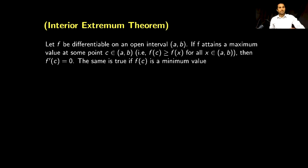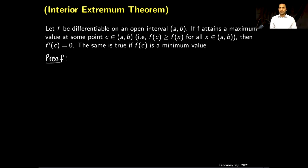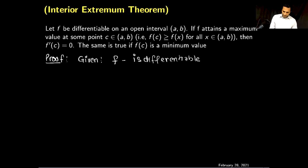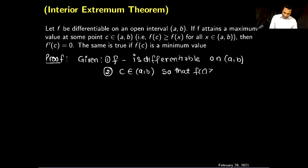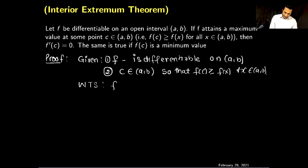Now let me give you the proof of this theorem. To begin, I will write down what is given and what we want to show. Given: the function f is differentiable on interval (a, b). Also given: c belongs to the open interval (a, b) such that f(c) is always larger than any other value of the function for all x in (a, b) — in other words, f(c) is the maximum value. What we want to show is that the derivative of the function at c is 0.